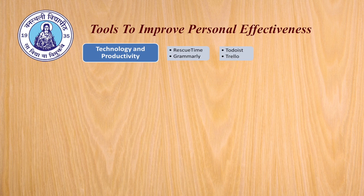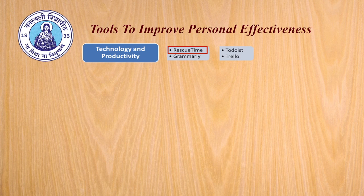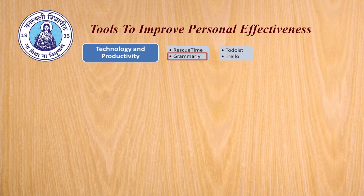Now let us discuss some very innovative tools available in the market that can help you increase your personal effectiveness. There are six broad areas where information technology can really help in improving personal effectiveness. The first category is technology and productivity. One such tool is RescueTime, which allows you to easily understand and optimize how you spend your time and attention. This software runs in the background and tracks the applications and websites you use. You can then generate reports to discover where your time is going and set productivity goals. The next tool is Grammarly, an app that automatically detects potential grammar, spelling, punctuation, word choice, plagiarism, and style mistakes in writing.